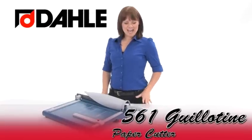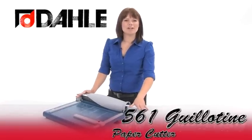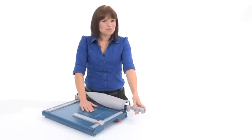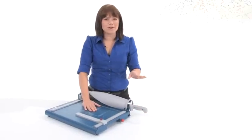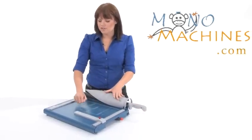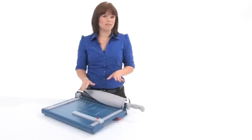Hi, I'm Holly with Mono Machines, and this is the Dolly 561 Cutter. It's got a self-sharpening blade, so you don't have to worry about sharpening it yourself, and it's got a sturdy metal base so it's not going to warp like those wood bases.